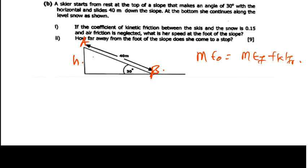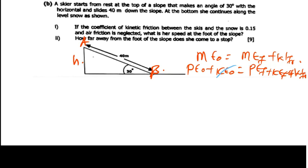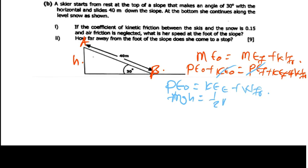Since there is friction, this is non-conservation of energy. The mechanical energy initial equals mechanical energy final plus work done by friction. At point A, the object started from rest so kinetic energy is zero. At point B, we don't expect potential energy. So potential energy initial equals kinetic energy final plus friction force times distance, which gives MGH equals half MV squared plus friction force times 40.